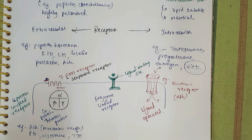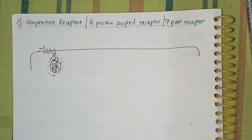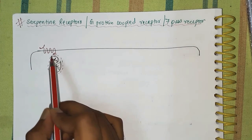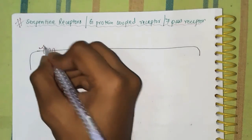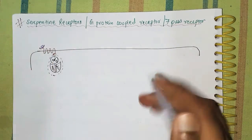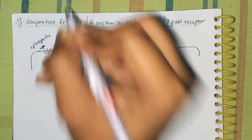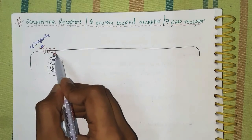Our discussion will remain confined to G protein-coupled receptors. As you know, they have a ligand binding domain and an intracellular effector domain. For example, when a ligand or hormone like epinephrine binds to the receptor, the intracellular part undergoes certain changes and activates the G protein.